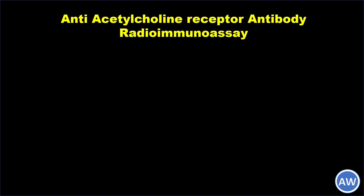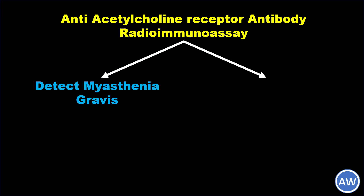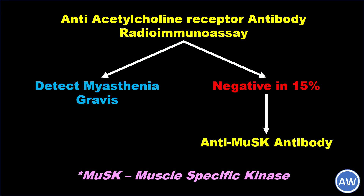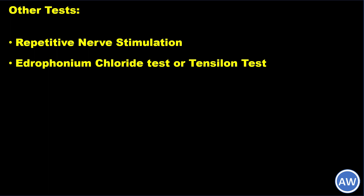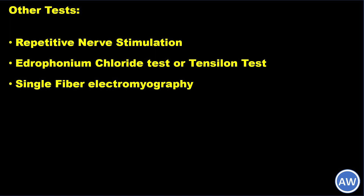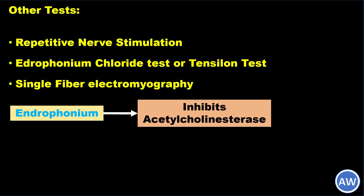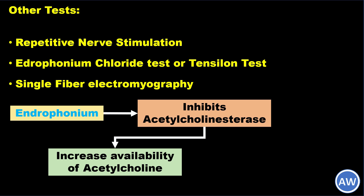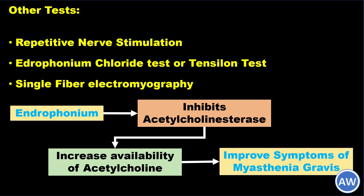For diagnosis, anti-acetylcholine receptor antibody radio-immunoassay can be done to detect myasthenia gravis. However, about 15% of people with myasthenia gravis have a negative radio-immunoassay. These people can be tested with anti-MuSK antibodies. MuSK, or muscle-specific kinase, is a transmembrane protein critical for transmission of impulses in the neuromuscular junctions, and development of autoantibodies to MuSK proteins can also precipitate symptoms of myasthenia gravis. Repetitive nerve stimulation, the edrophonium chloride test or Tensilon test, and single-fiber electromyography are other tests for detection. Edrophonium is an inhibitor of acetylcholinesterase, and its administration increases the availability of acetylcholine for the postsynaptic membrane, thus improving the symptoms.